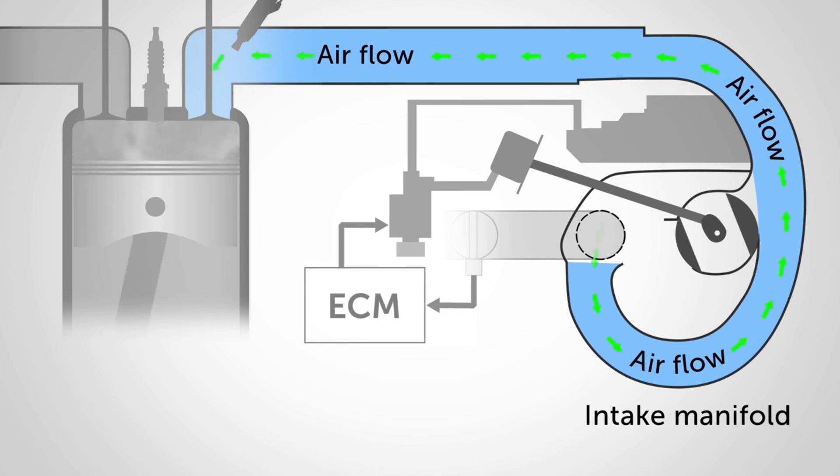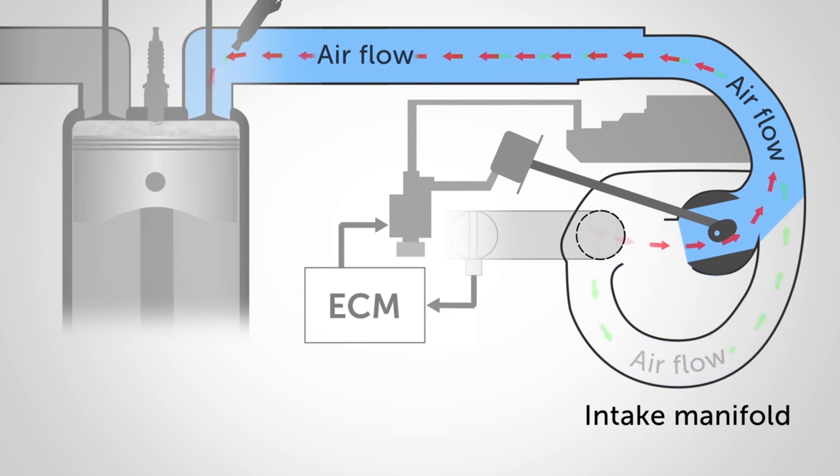The engine's electronic control module selects from the two runner lengths to tune the intake manifold to the operating conditions, specifically engine speed and throttle valve opening.